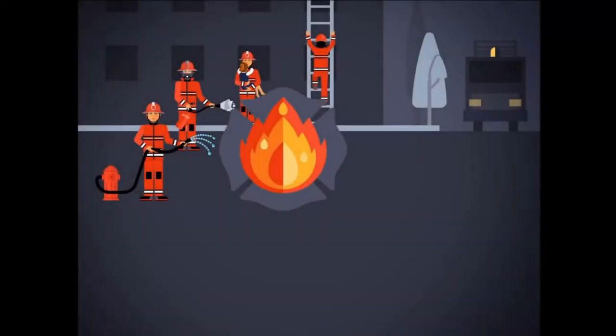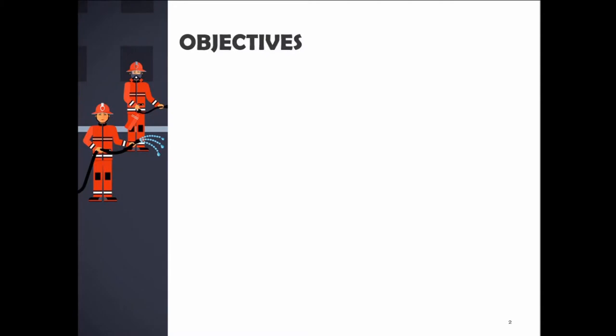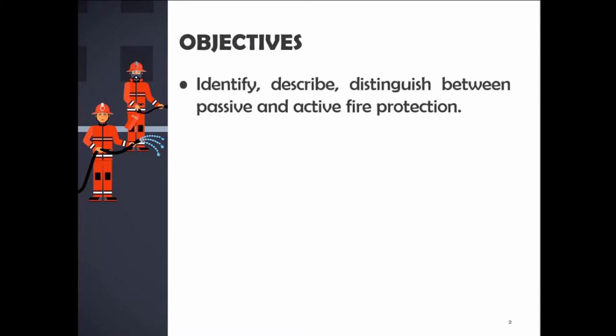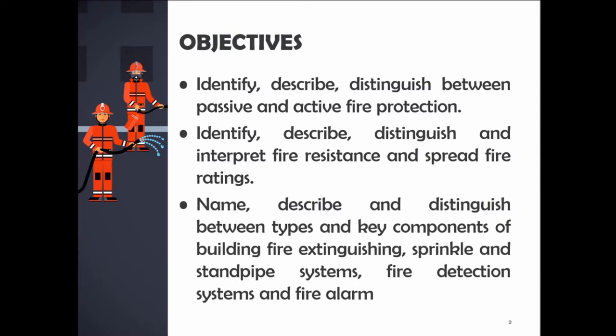Good day everyone. Let us talk about life safety systems in buildings, focused on fire in buildings. Objectives: Identify, describe, and distinguish between passive and active fire protection. Identify, describe, distinguish and interpret fire resistance and fire spread ratings. Name, describe and distinguish between types and key components of building fire extinguishing, sprinkler and standpipe systems, fire detection systems, and fire alarm.